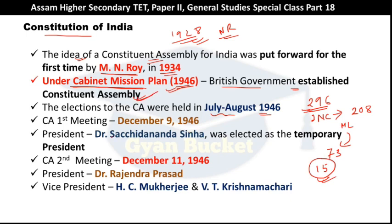The Constituent Assembly was formed, and its first meeting was held on December 9th, 1946. The Assembly president was Dr. Sachidananda Sinha, who was elected as the temporary president. The question of who was the temporary president of the Constituent Assembly — the answer is Dr. Sachidananda Sinha.